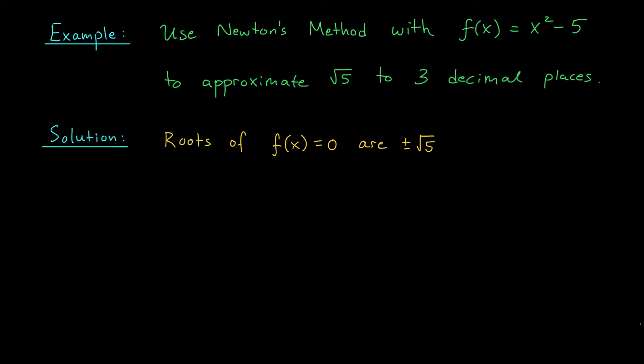What should we use for an initial guess? Well, root 5 is probably pretty close to root 4, right? It's probably pretty close to 2. So why don't we use that as our initial guess? Our initial guess is x naught equals 2.